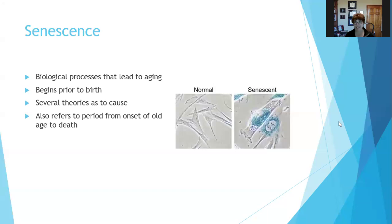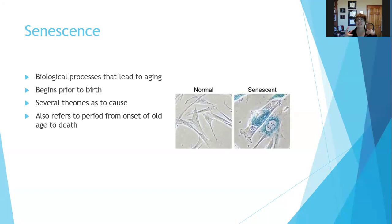Senescence is the scientific word for aging. By definition, senescence refers to the biological processes that lead to aging. Some theorists say that senescence begins prior to birth — so the minute your cells are born, they start to age. Before you're even born, you're aging. There are lots of theories as to the cause of aging, and we'll talk about a couple of them.